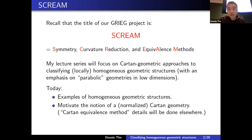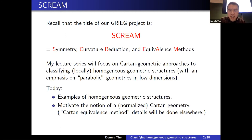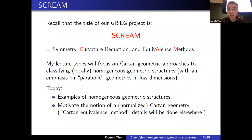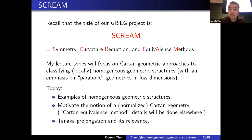The Cartan equivalence method is a general way of arriving at a Cartan geometry, with much work done in the 20th century continuing today on its technical aspects. I'll give references for it, but I want to use this viewpoint for classifying geometric structures. I also want to introduce an important ingredient called Tanaka prolongation and explain its relevance.